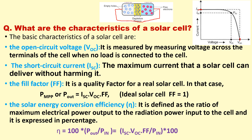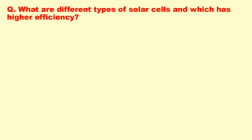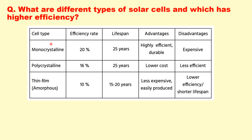What are the different types of solar cells and which has higher efficiency? Discussing only silicon solar cells: there are monocrystalline, polycrystalline, and thin film or amorphous solar cells. Monocrystalline silicon solar cells have the highest efficiency at around 20 percent; polycrystalline have 16 percent; and thin film or amorphous have 10 percent. Monocrystalline cells are highly efficient but expensive; polycrystalline are lower cost but less efficient.